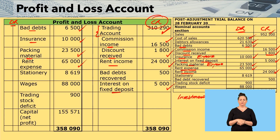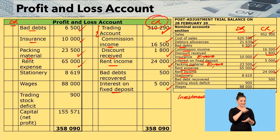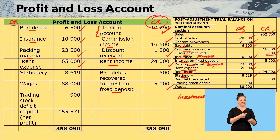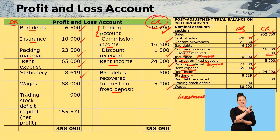The next expense is stationery. Stationery is an expense, hence you see it on the debit side of your nominal account section. Stationery $8,619 goes on the debit side of the profit and loss account.